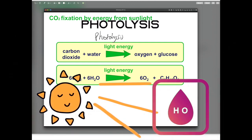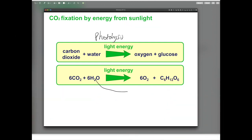In the photolysis of water, light energy is used to split the water molecule into oxygen, which is a waste product, and hydrogen, which is used in the formation of glucose.